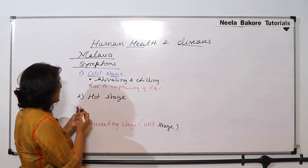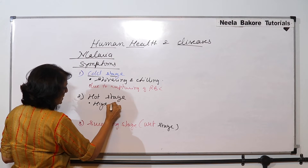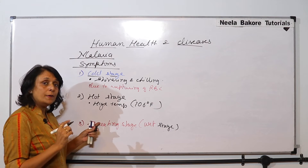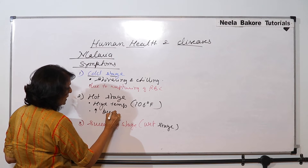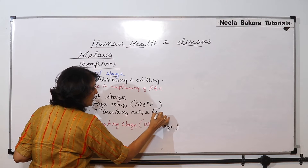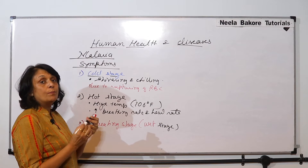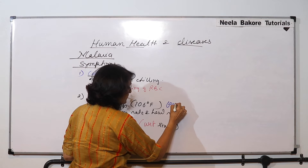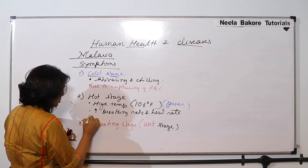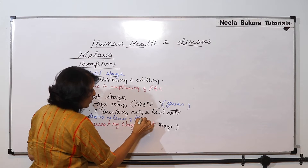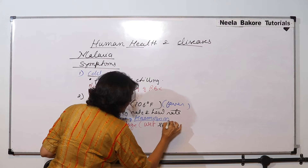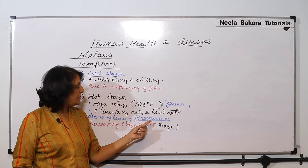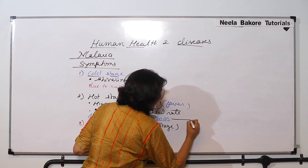In the hot stage, as the name tells us, the temperature rises. There is high temperature — it can go to 106 degrees Fahrenheit. Along with high temperature, there is an increase in breathing rate and heart rate. The reason for this increase in temperature, which we call fever, is the release of hemozoin. Hemozoin is released when the RBCs rupture.